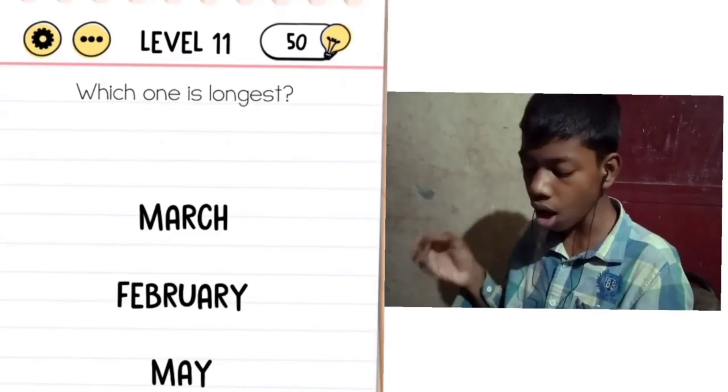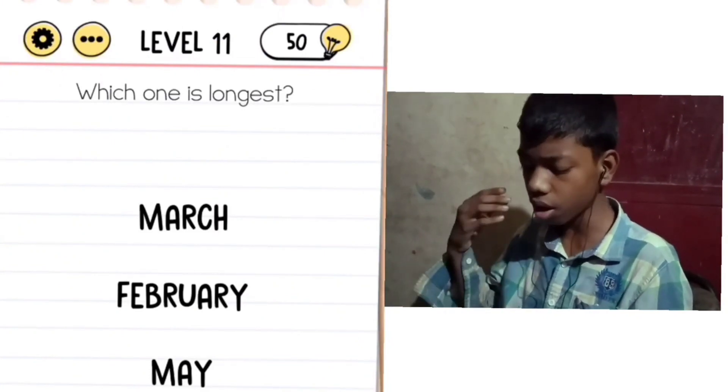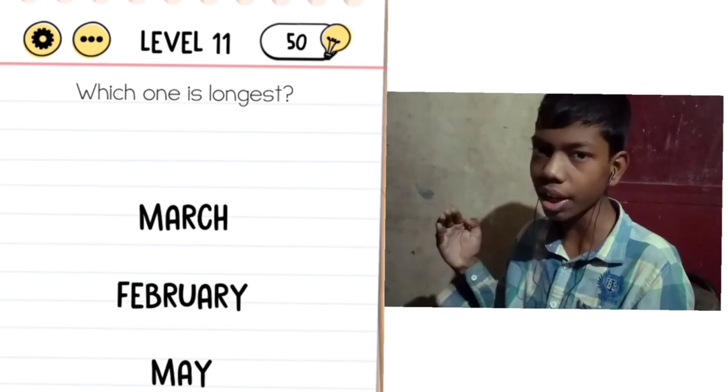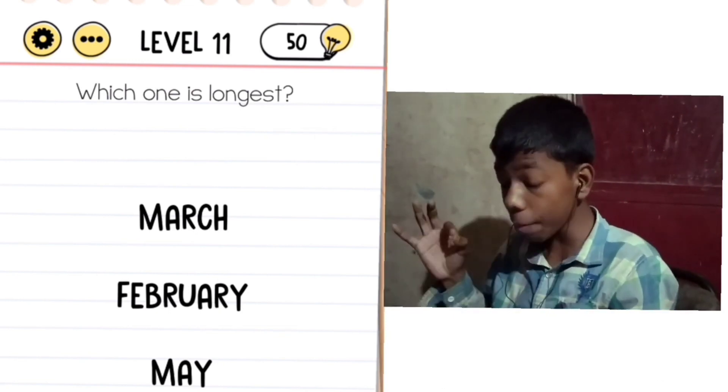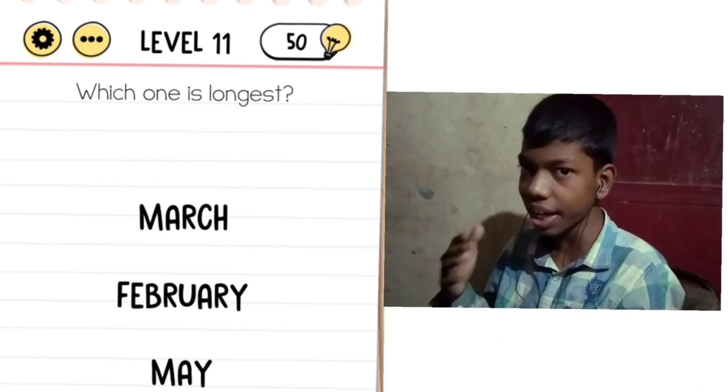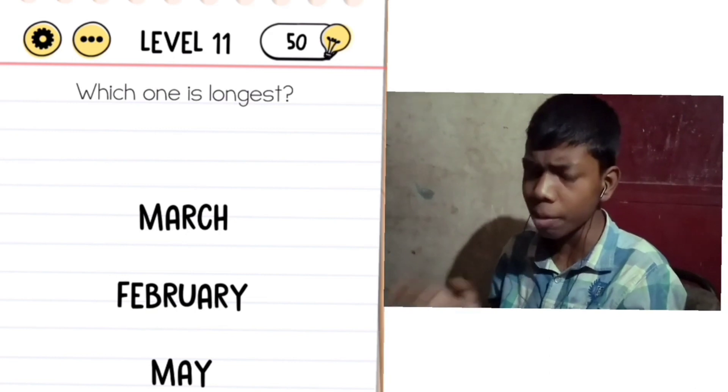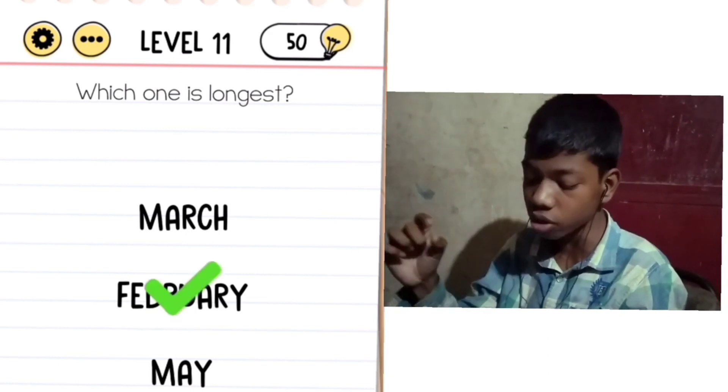Level 11: Which one is longest? We have March, February, and May. You might think March has the most days. But it's not that. I told you, what seems obvious in this game is not the answer. Let's think about which word is longest. In this case, we have to tell which word has the most alphabet letters. February has the most letters.